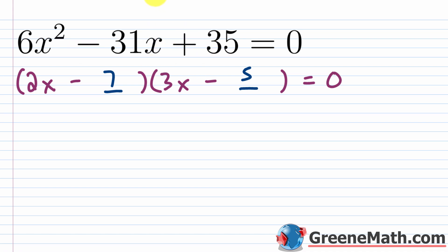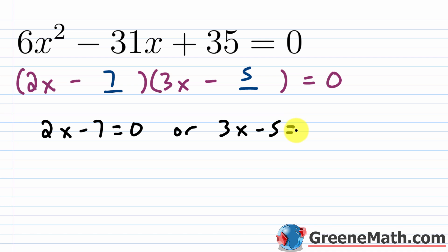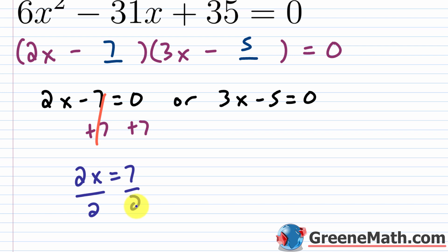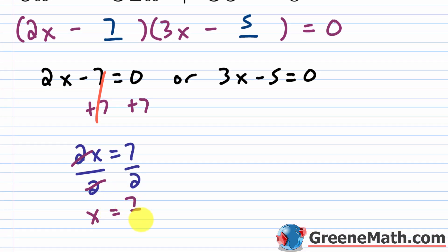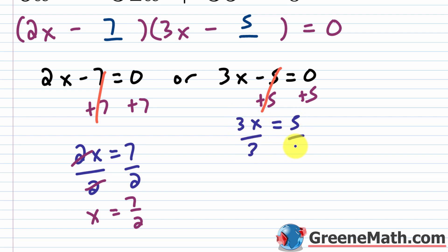With (2x − 7)(3x − 5) = 0, apply the zero product property. Set each factor equal to zero: 2x − 7 = 0 gives 2x = 7, so x = 7/2. And 3x − 5 = 0 gives 3x = 5, so x = 5/3. The solutions are x = 7/2 or x = 5/3.